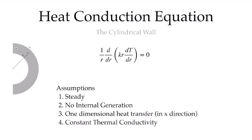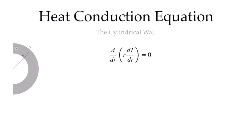Finally, to simplify this further, we can multiply r by zero to eliminate it. And from assumption four, if the thermal conductivity is constant, we can pull it out and divide zero by it, eliminating it as well.